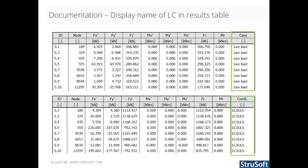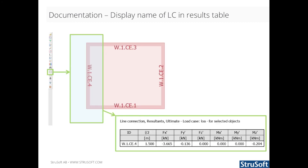In FemDesign 17, the name of the load combinations and load cases can be displayed for the load case and load combination result tables. This column is hidden by default — if you want to see it, go to properties and choose to see hidden columns, then you can unhide the column. It is now possible to list results only for selected line connections. Use the list command, select the line connections to list with a blue box selection, and select the results to be listed for selected components.